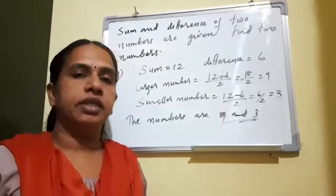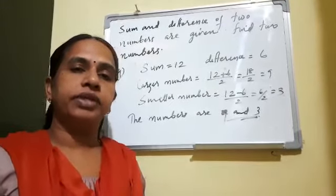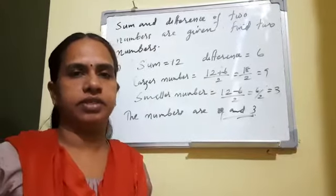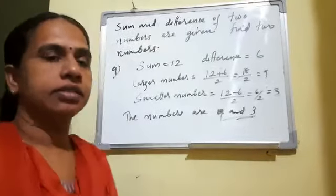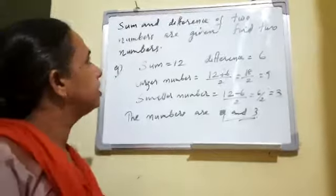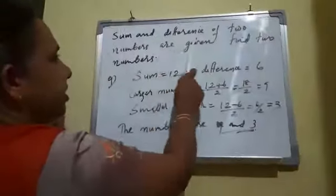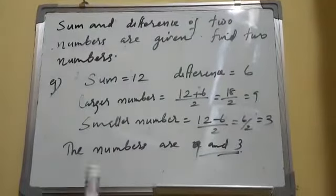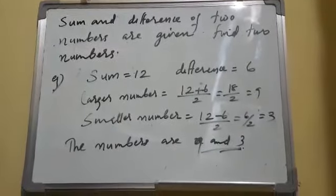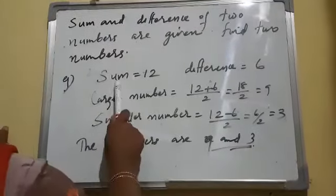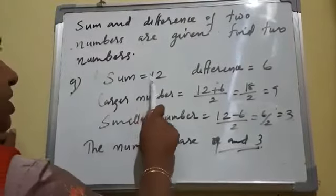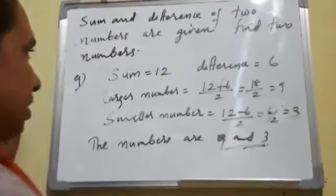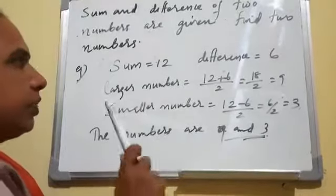You can study how to find two numbers using the sum and difference. The sum and difference of two numbers are given — find the two numbers. Here, sum and difference of two numbers are given: sum equals 12, difference equals 6. We want to find the two numbers.